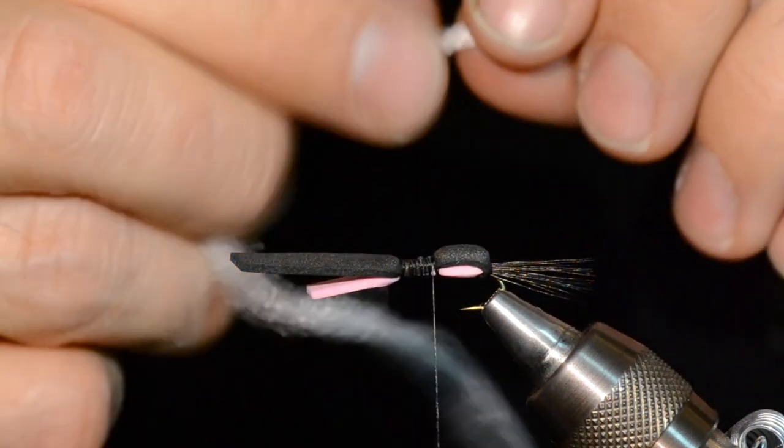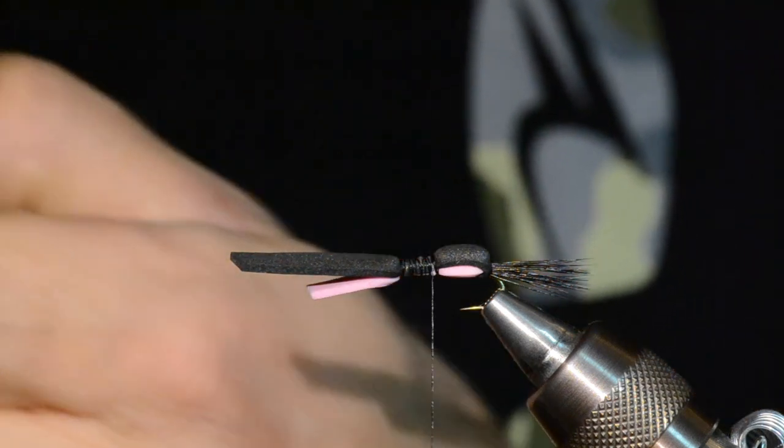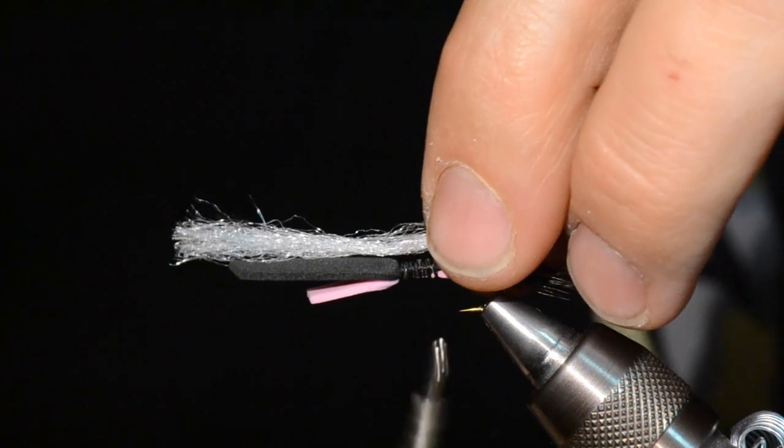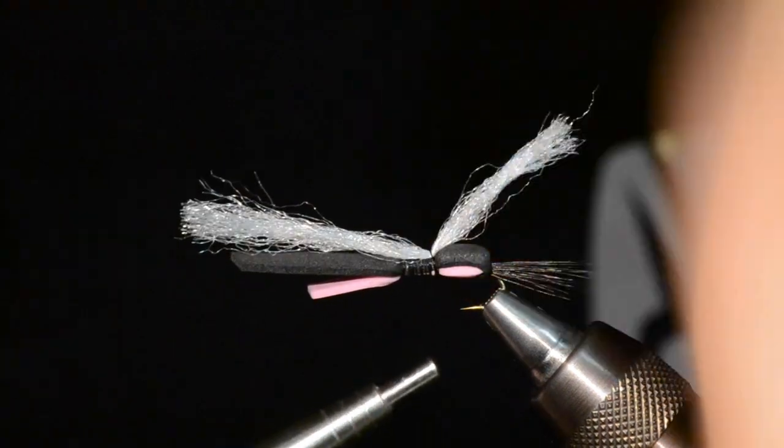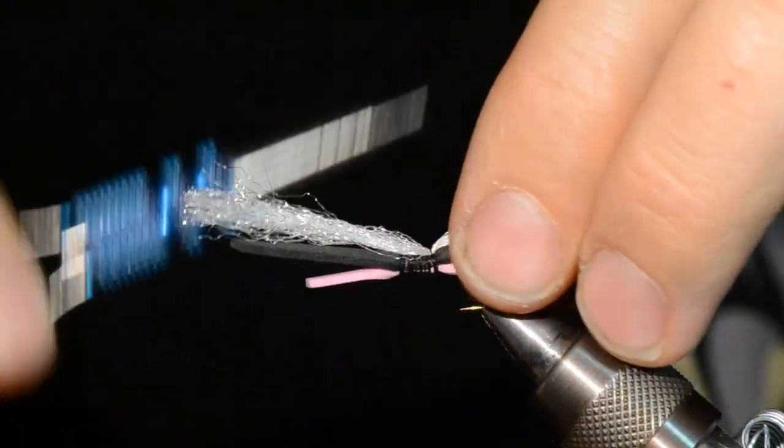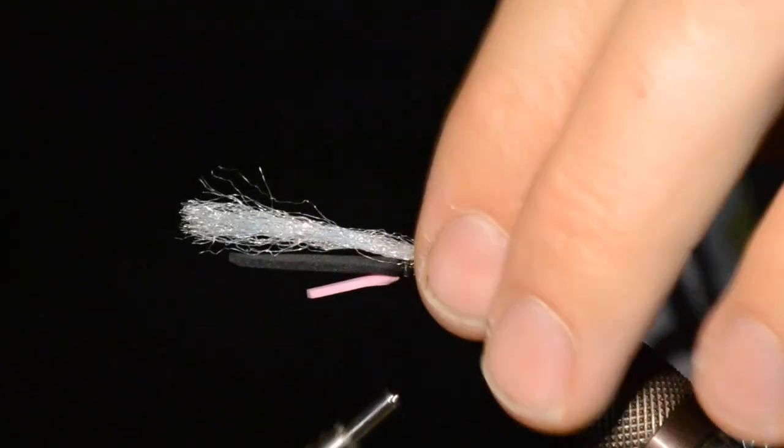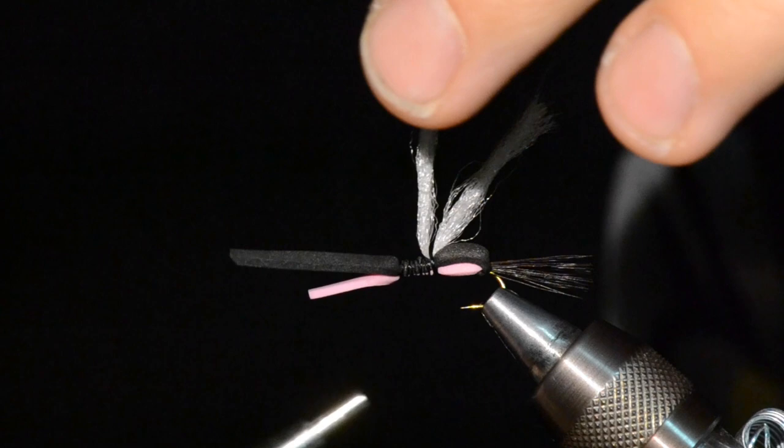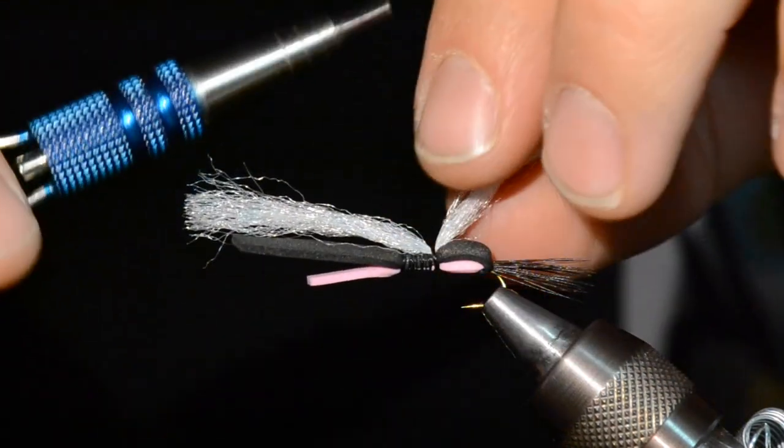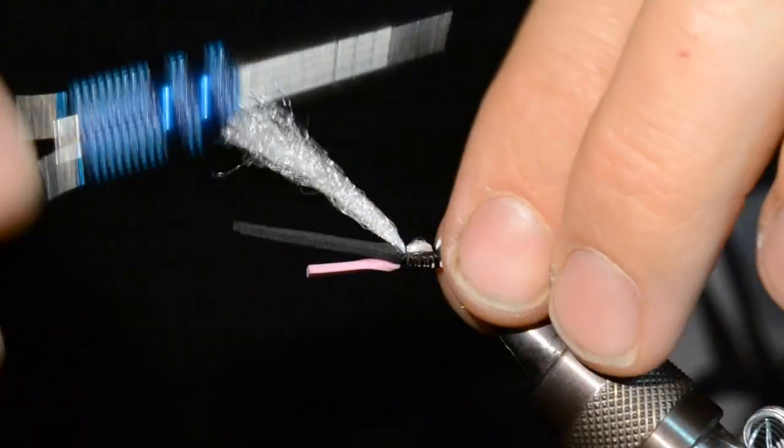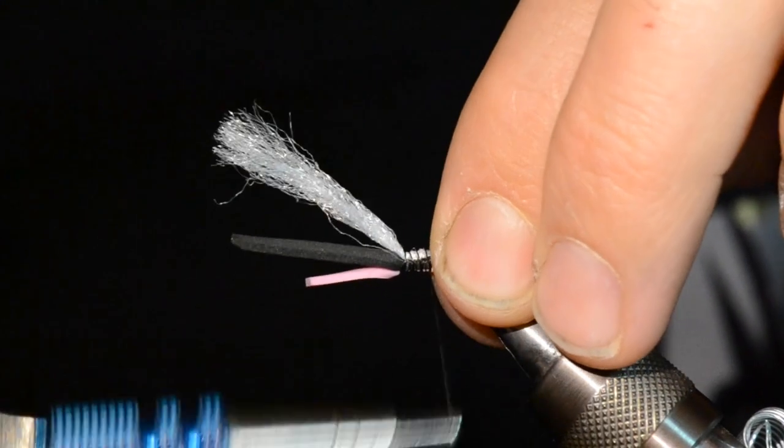Now we're going to bury those two layers of foam in there because we're going to wrap our hackle right over that spot. That tends to twist it so you can just correct it. Make sure everything lines up how you want it. Straighten it a bit more if you need. This is White McFlylon, a super buoyant poly yarn. That's what I like to use for the wing on the Hippie Stomper. I'm going to lay this right on top of that midpoint there. Then I'm going to tie this down all the way up at the front here as well. Then a few wraps just to secure it in the middle.